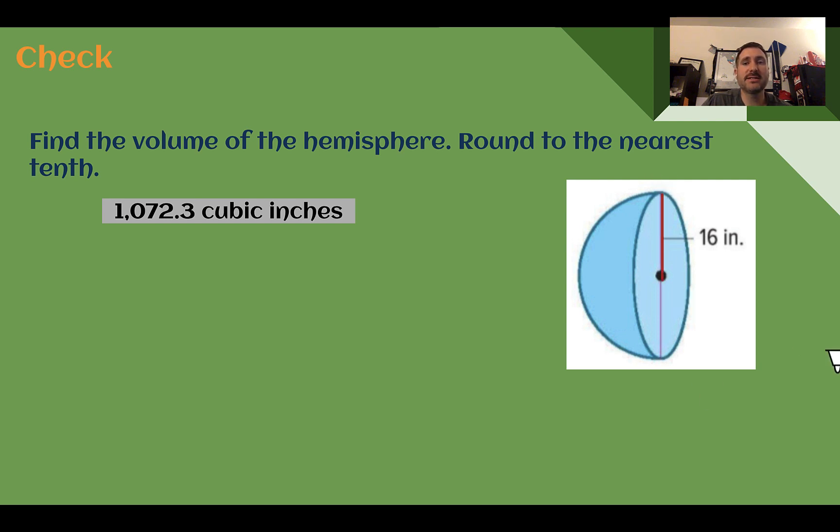First, the radius is 8. So if I'm doing 2 thirds times pi, my radius is 8 to the third power. Plugging this in, 8 times 8 times 8 is 512 times by 2. I would get 1024 and then dividing by 3. That might be divisible by 3, but I'm going to be multiplying by pi in a second here anyway. So 1024 divided by 3 times pi.